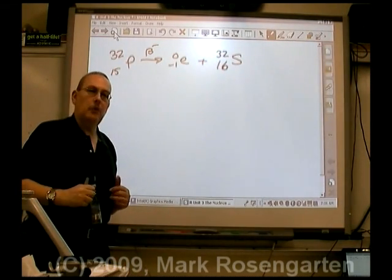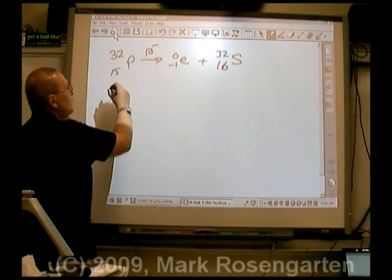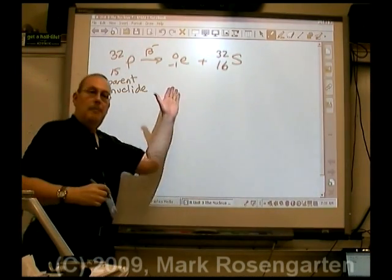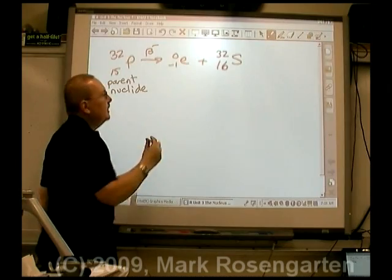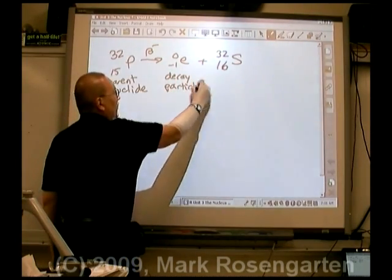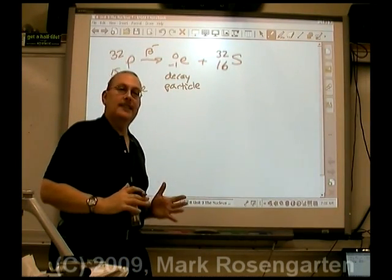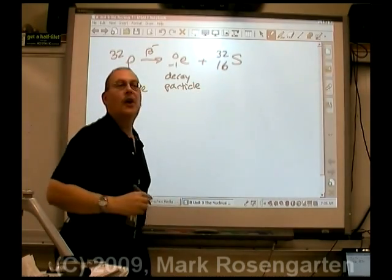The nucleus you start with, the unstable nucleus, is called the parent nuclei. The beta particle is referred to as a decay particle. And the more stable nucleus that you form is called the daughter nuclei.